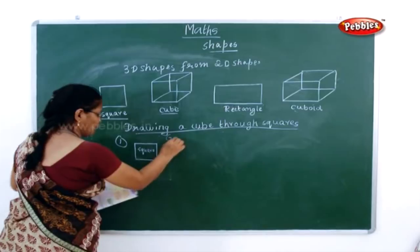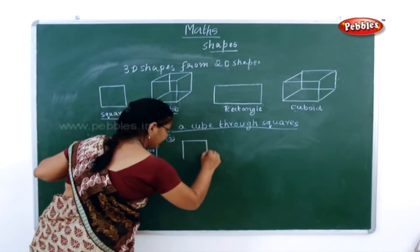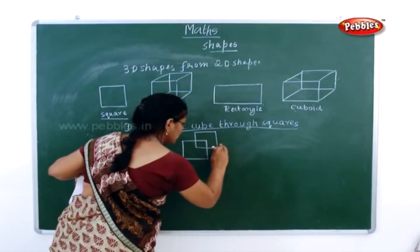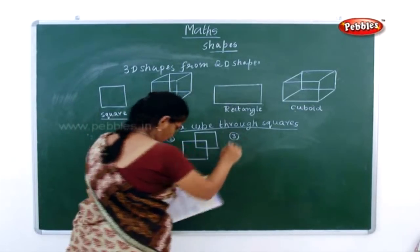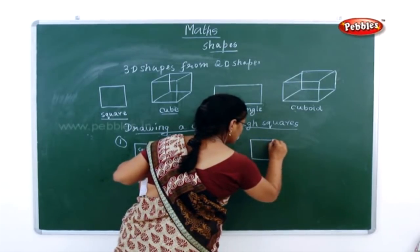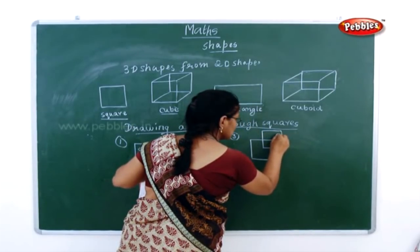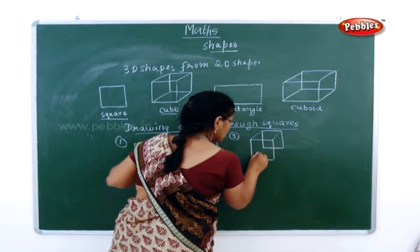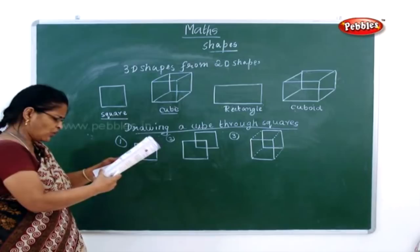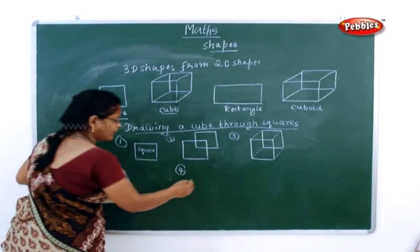The second step: draw another square as shown. One square is already drawn, now one more square you have to draw. The third step: draw dotted lines joining the corresponding corners. The fourth step: with these dotted lines you have to draw a perfect cube.